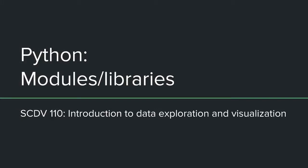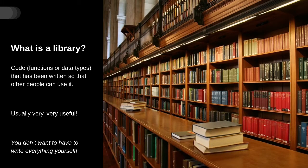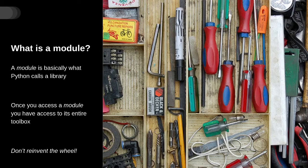So what is a library? It's terminology used in many different programming languages. It refers to code that contains functions or very specific data types — floats, integers, lists, and others we'll encounter. You may have separate code with these functions or data types defined, shared and distributed so others can use it. Usually people use it because it's incredibly useful and you don't want to reinvent the wheel every time. Python specifically uses the terminology module, which is really what Python calls a library as you might hear in other programming languages.